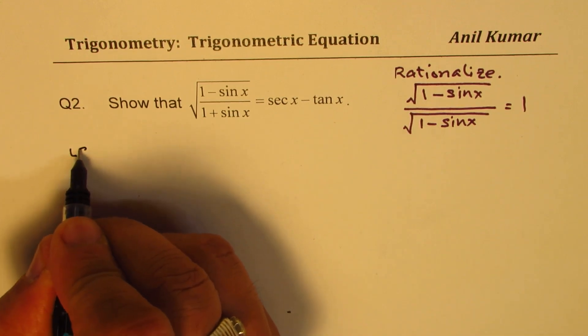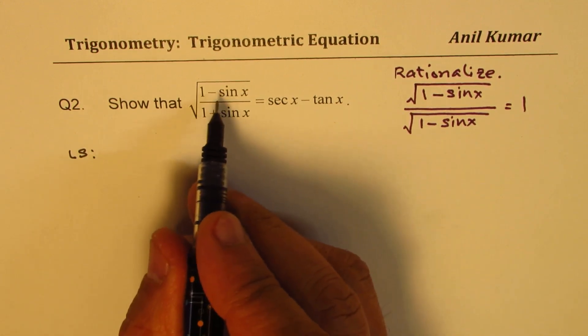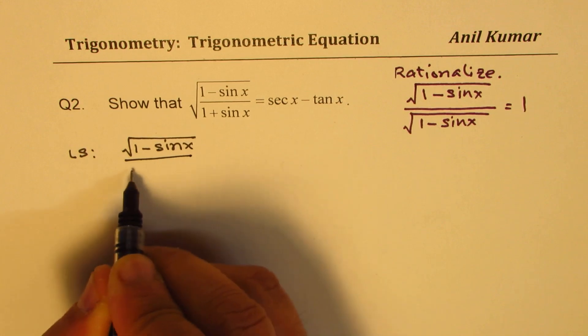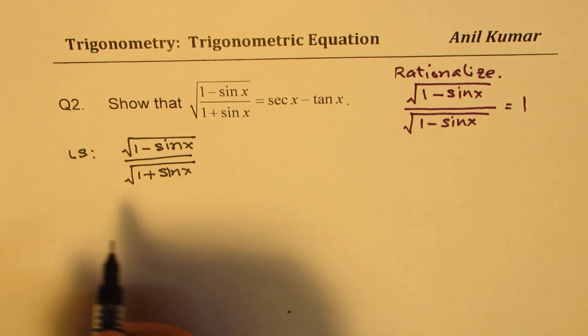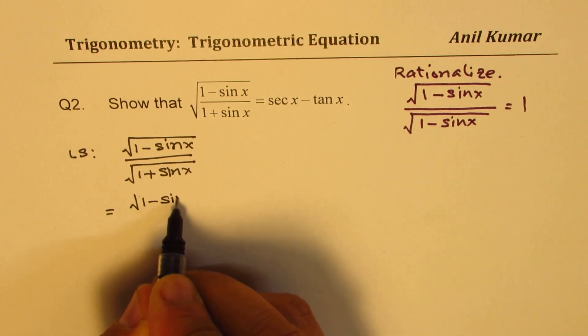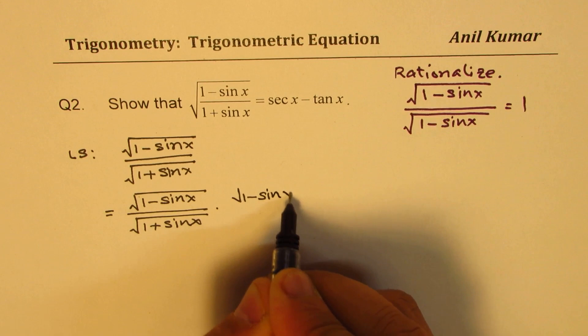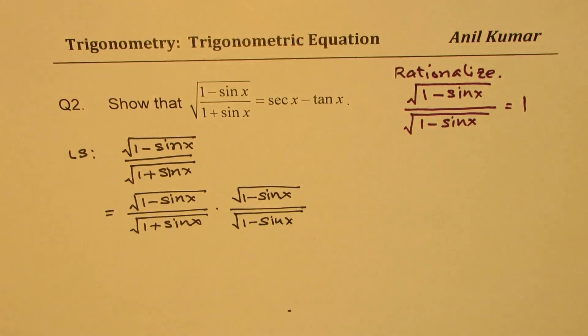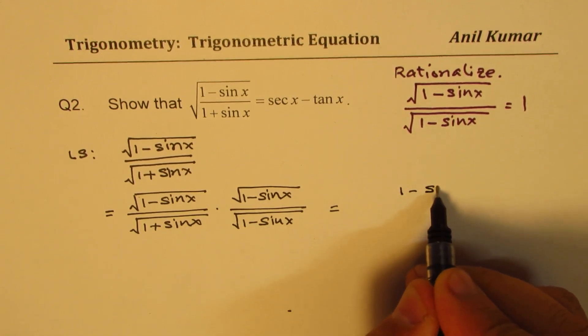So let's begin with left side. You can start with any side, but in this case, it's better to start with left side. We could write this as √(1-sinx)/√(1+sinx). As I said, let us rationalize. So we could write this as √(1-sinx)/√(1+sinx) times √(1-sinx)/√(1-sinx). Now, this is conjugate of denominator. So when you do that, this becomes a perfect square. So we get (1-sinx) in the numerator.